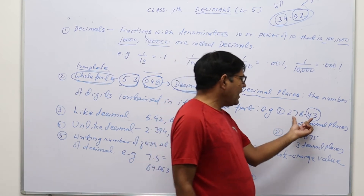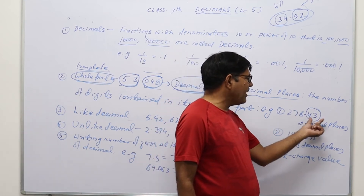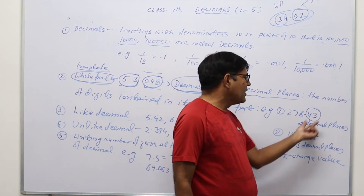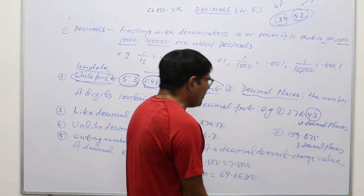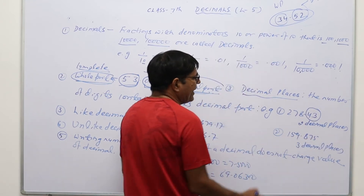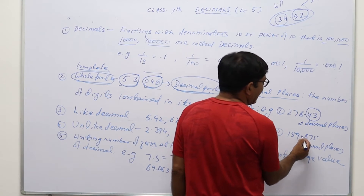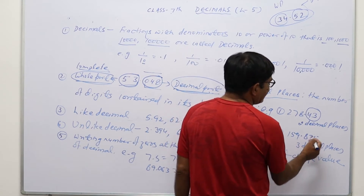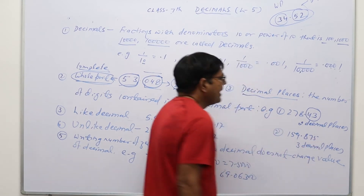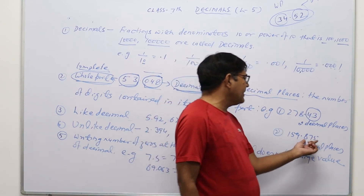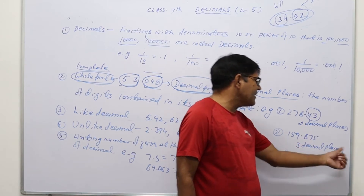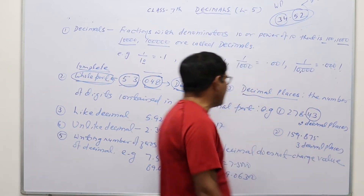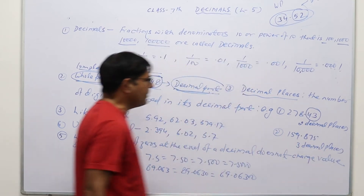For example, in 278.43, there are two digits in the decimal part — that is 4 and 3 — so this has two decimal places. If we take another example, 159.875, then in the decimal part there are three digits, so this is three decimal places. So decimal places means the number of digits contained in the decimal part.